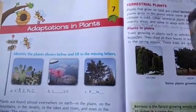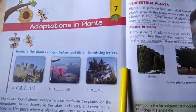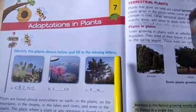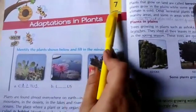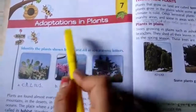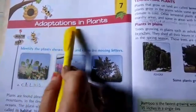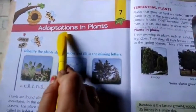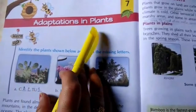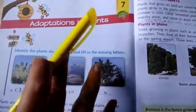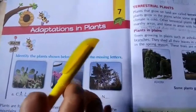Hello students, today we are going to start with one more new lesson. In the previous class we studied Chapter 6, 'How Plants Make Food.' Today we will start with Chapter 7, 'Adaptation in Plants.' Adaptation means the process or action of adapting or being adapted — that is, to adjust to the conditions where the plant lives.